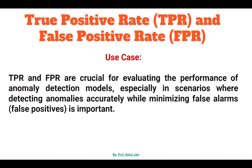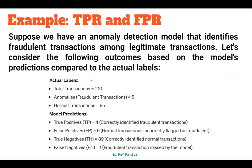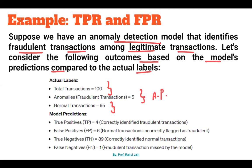True positive rate and false positive rate are crucial for evaluating the performance of anomaly detection models, especially in scenarios where detecting anomalies accurately while minimizing false alarms is important. For example, suppose we have an anomaly detection model that identifies fraudulent transactions among legitimate transactions. We need to figure out how many transactions are fraudulent and how many are legitimate. Consider the following outcomes based on model predictions compared to actual labels: total transactions are 100, out of which anomalies — fraudulent transactions — are 5, and normal transactions are 95.